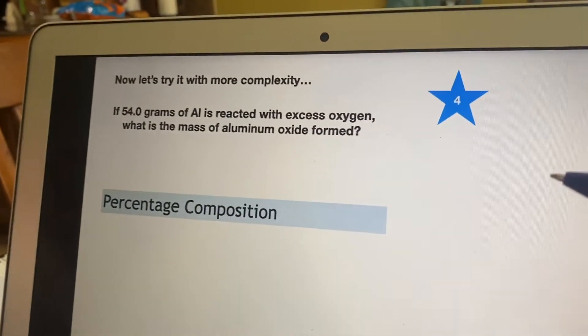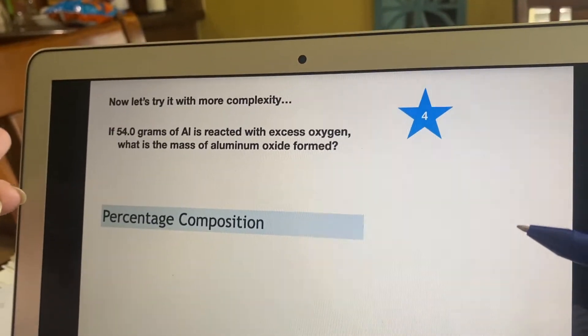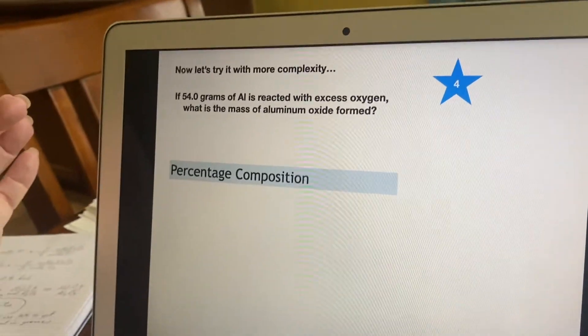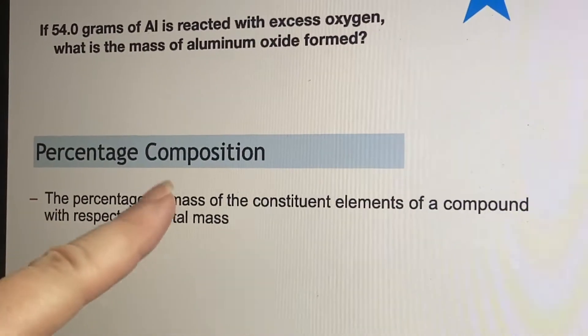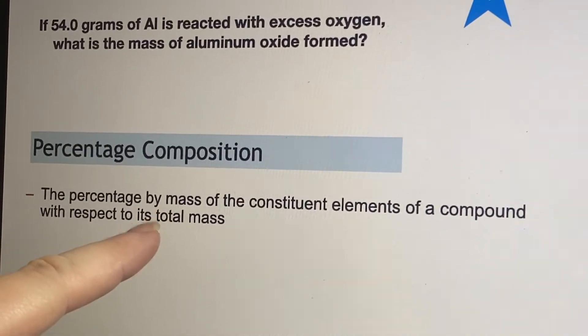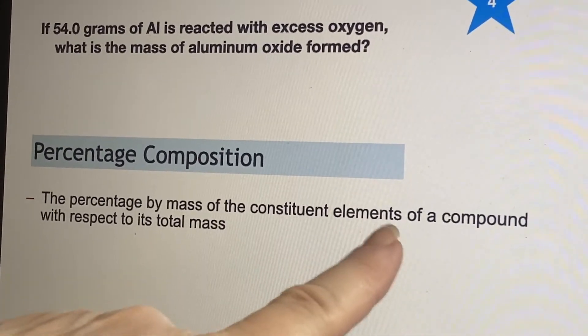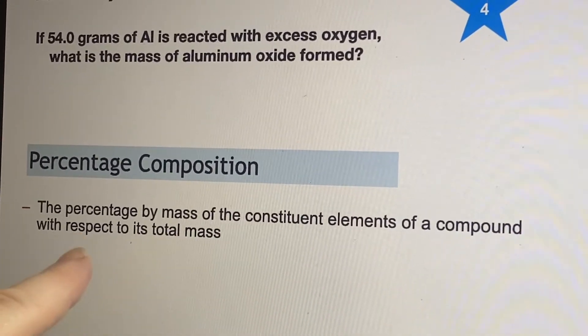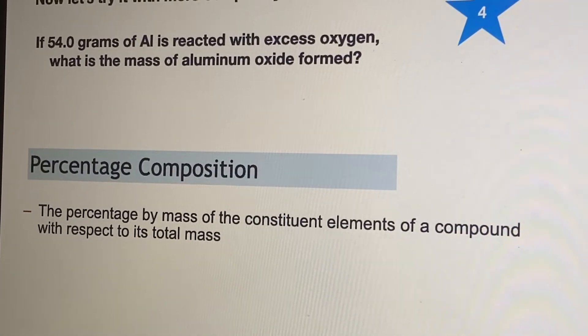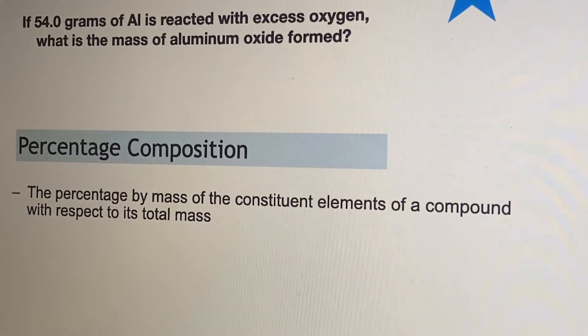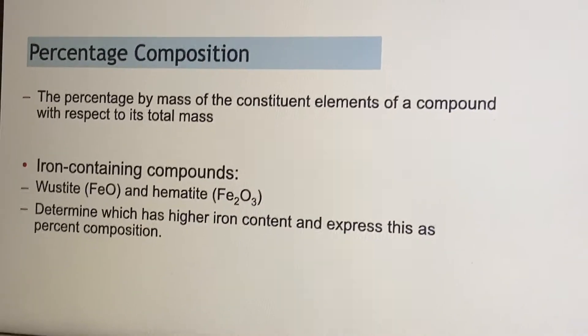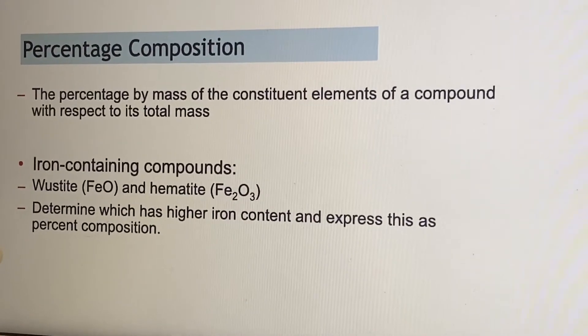Which leads us to another thing that you need to know how to do, and that is calculating percent composition. Well, what is that? It's done by mass, that's the important thing. You're going to look at the different elements in the compound and say, compared to the total mass, what is the percent mass of each element?